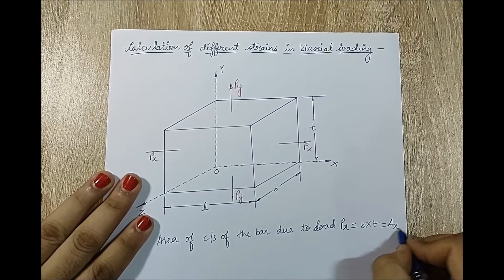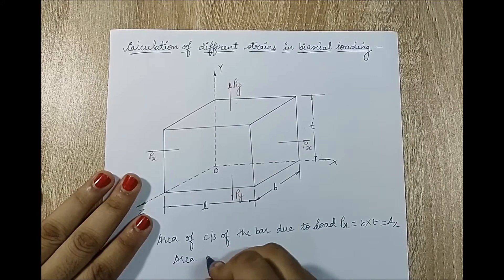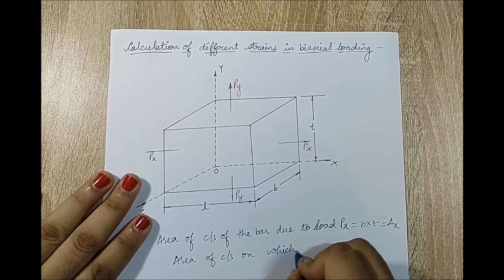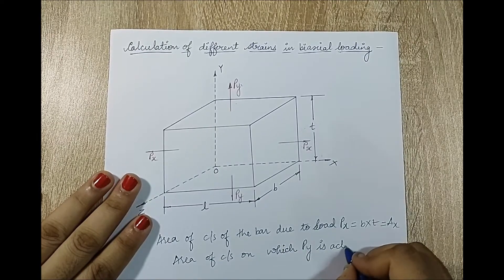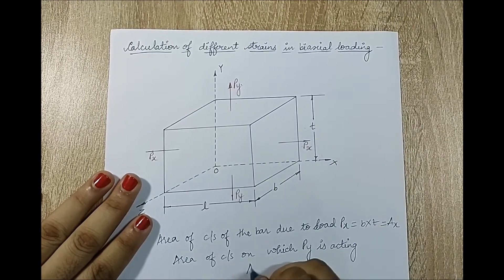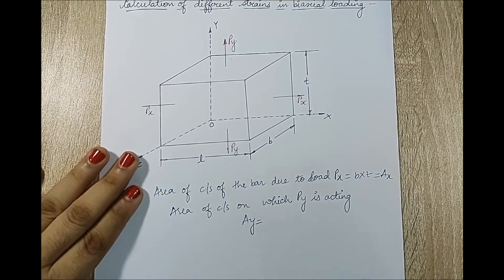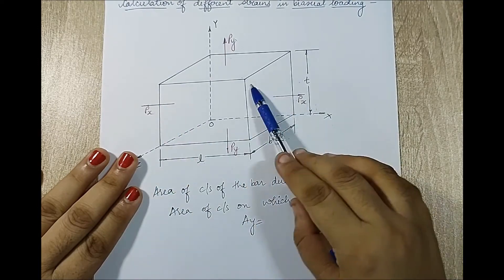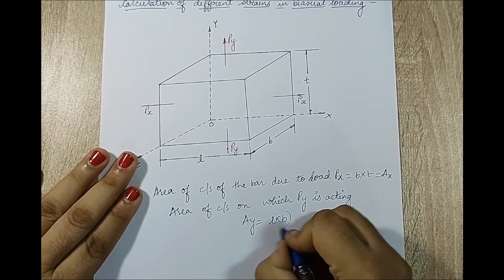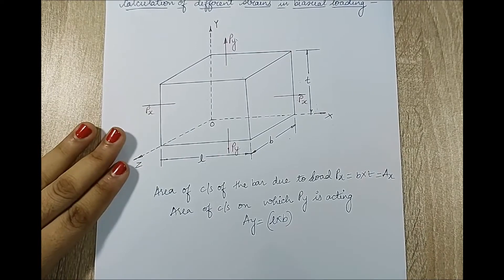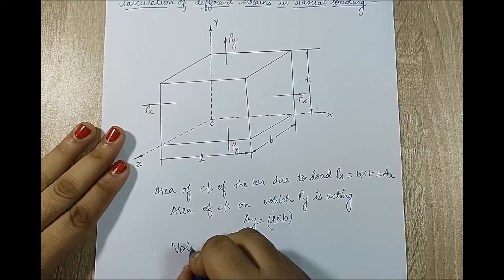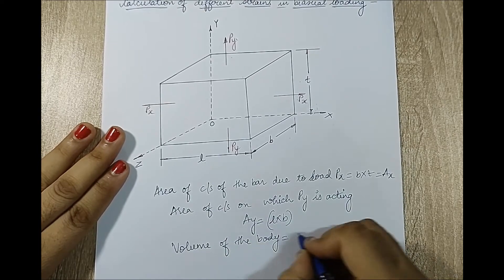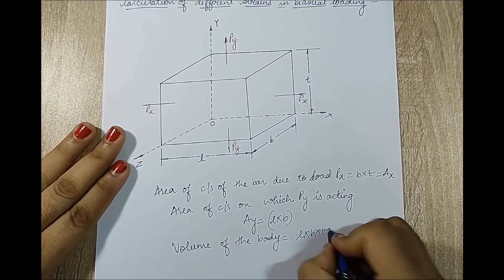Similarly, the area of cross section on which Py acts is Ay = L·B, since if you look carefully, Py acts on the face with dimensions L and B. The volume of the body remains L·B·T.